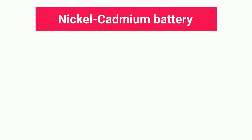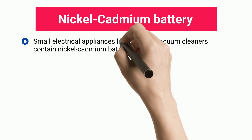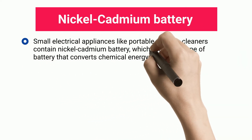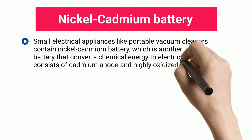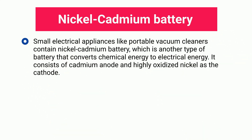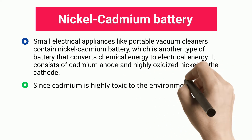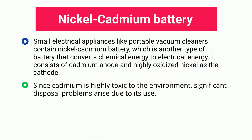Small electrical appliances like portable vacuum cleaners contain nickel cadmium batteries, which is another type of battery that converts chemical energy to electrical energy. It consists of a cadmium anode and highly oxidized nickel as the cathode. Since cadmium is highly toxic to the environment, significant disposal problems arise due to its use.